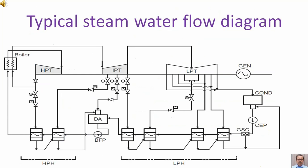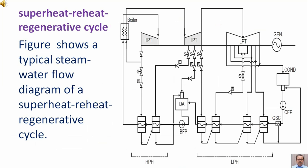Typical steam-water flow diagram in a thermal power plant. The figure shows a typical steam-water flow diagram of a superheat-reheat regenerative cycle. Regarding reheat, we talked about that in the previous lecture. In this lecture we are going to talk about the regenerative cycle.